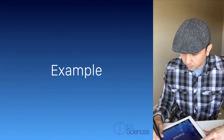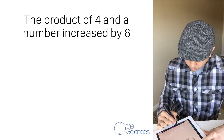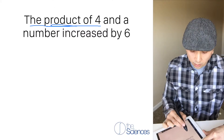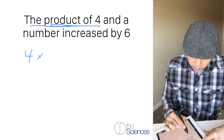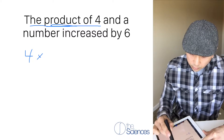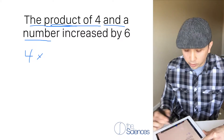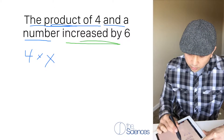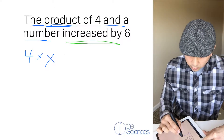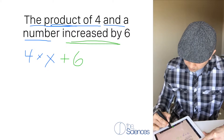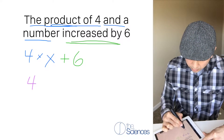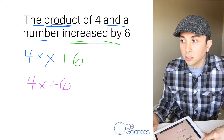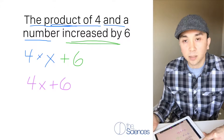Let's do another example. 'The product of 4 and a number, increased by 6.' We know that product means multiply, so 4 times a number, and that number can be the variable x. 'Increased by' means add, so plus 6. Therefore, 4x plus 6 is the same thing as saying 'the product of 4 and a number, increased by 6.'